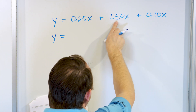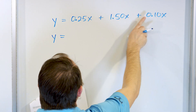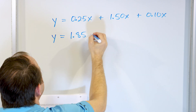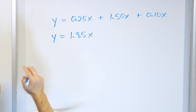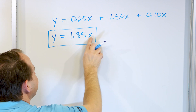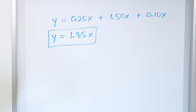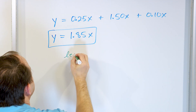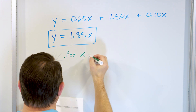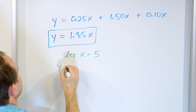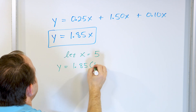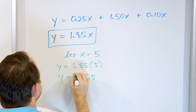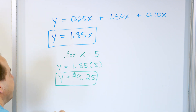Adding up the costs: pencils are 0.25X, notebooks are 1.50X, and erasers are 0.10X. Since these are like terms with the same variable, we can combine them: 0.25 + 1.50 + 0.10 = $1.85. So Y = 1.85X is the equation for this situation, where X is the number of kits made and Y is the total cost in dollars. Letting X equal five, we get 1.85 times 5 = $9.25 total cost for five kits.